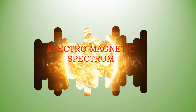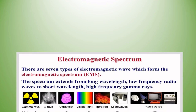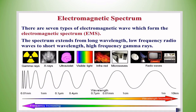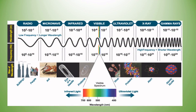Warm greetings to everyone. Today let us see about the electromagnetic spectrum. There are seven types of electromagnetic waves which form the electromagnetic spectrum. The spectrum extends from long wavelength, low frequency radio waves to short wavelength, high frequency gamma rays. The seven types are: radio waves, microwaves, infrared, visible light, ultraviolet, X-rays, and gamma rays.